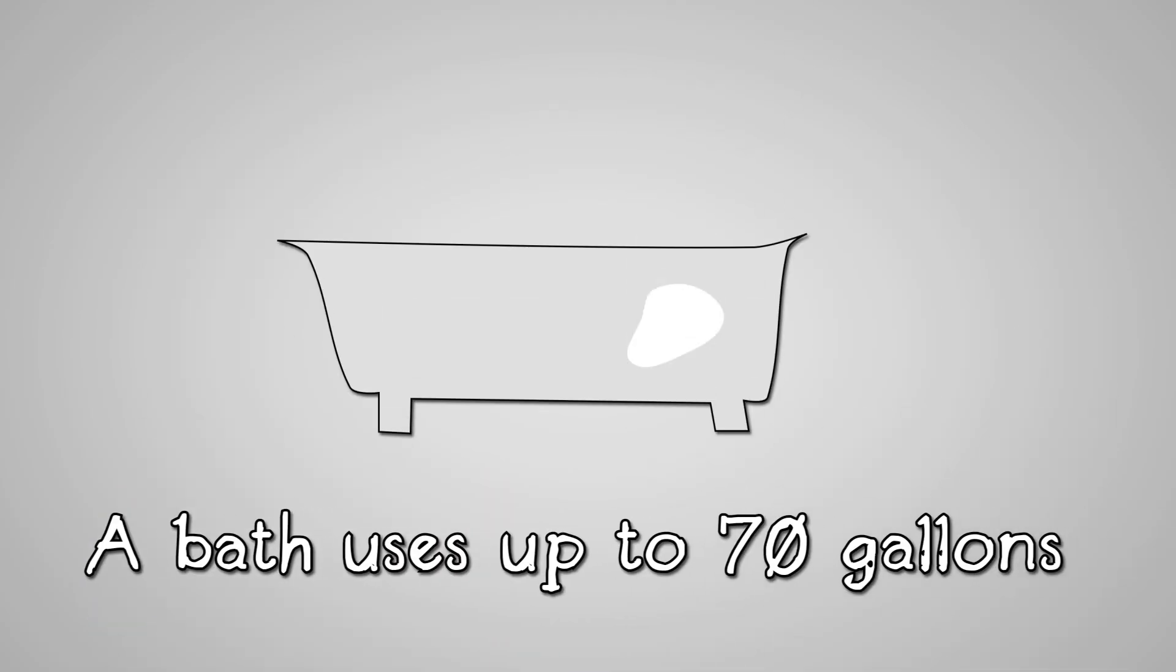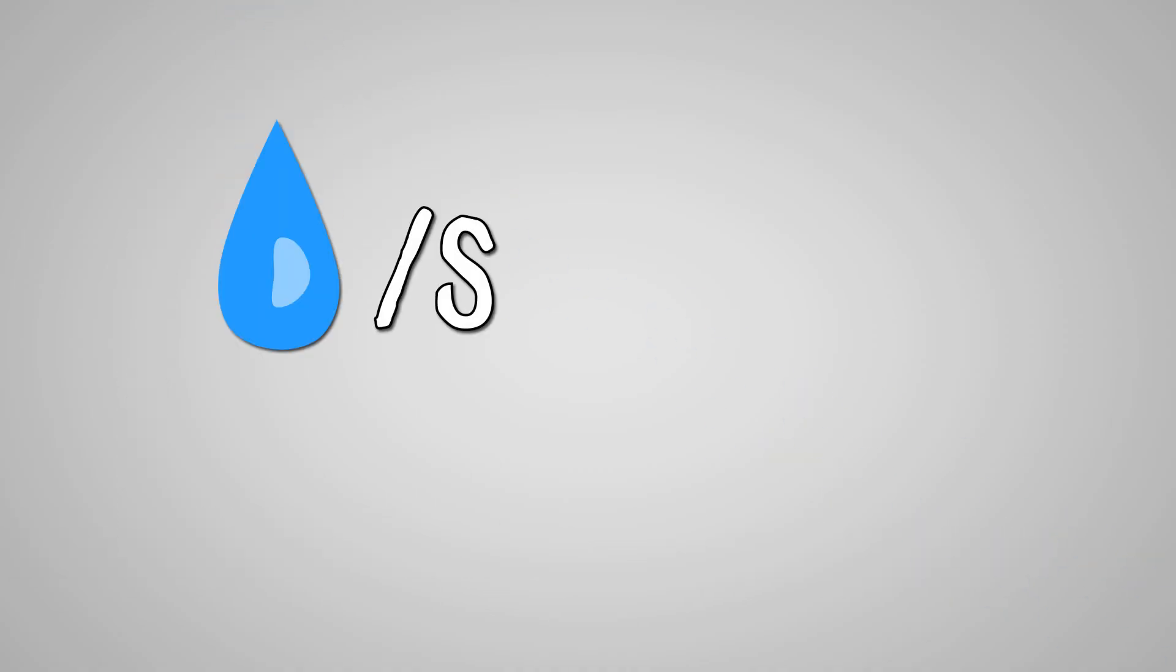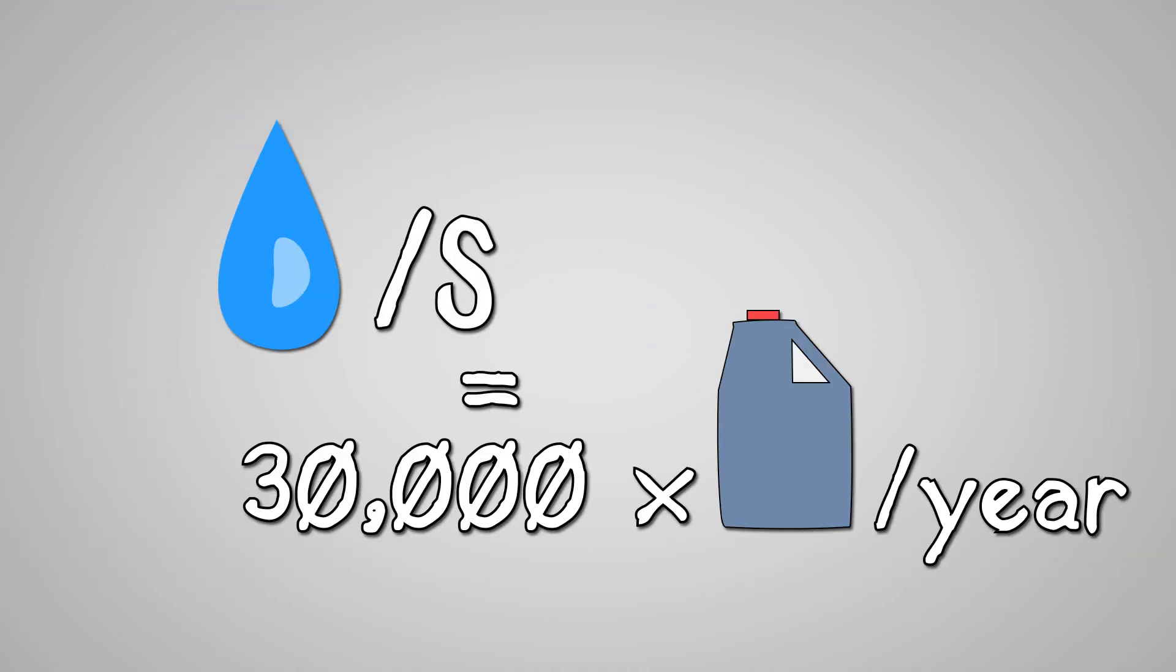A bath uses up to 70 gallons. A shower uses 10 to 25 gallons. One drip per second can become 30,000 gallons per year.